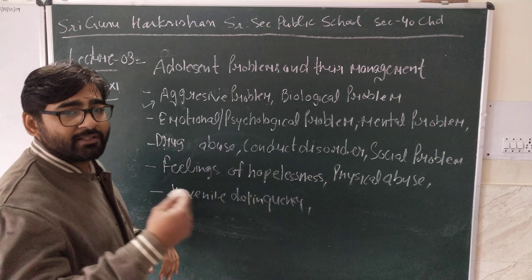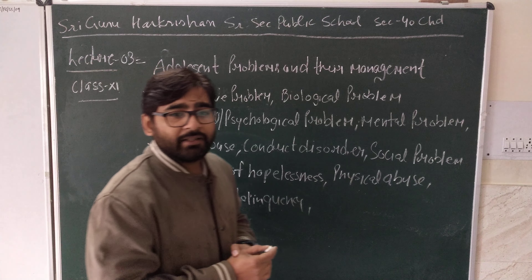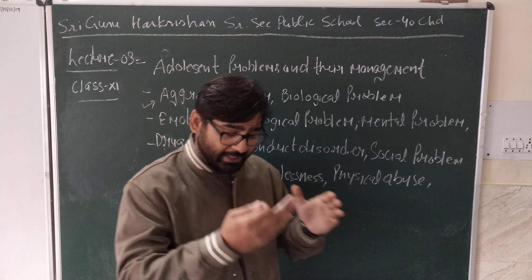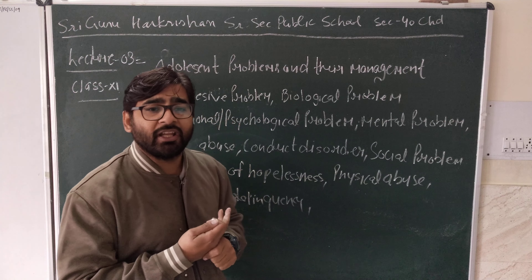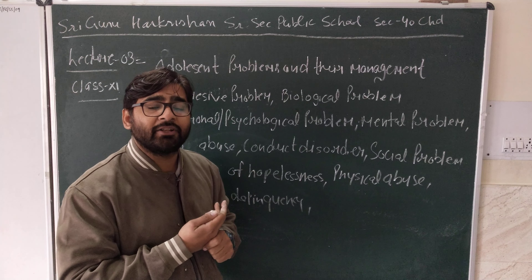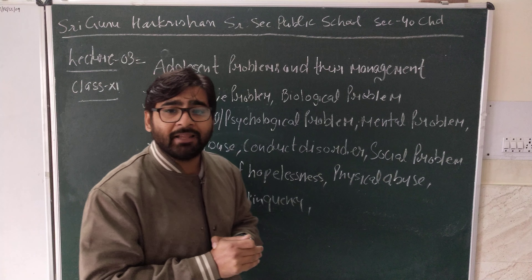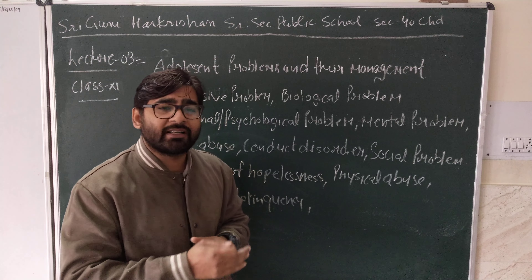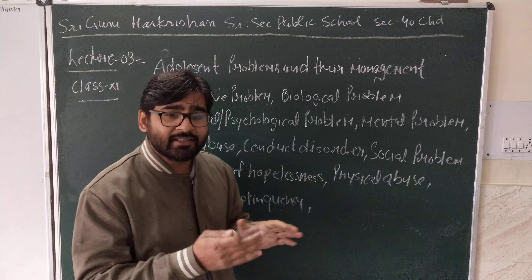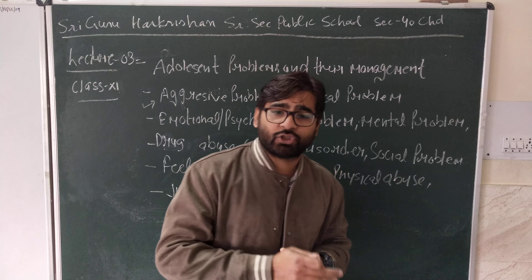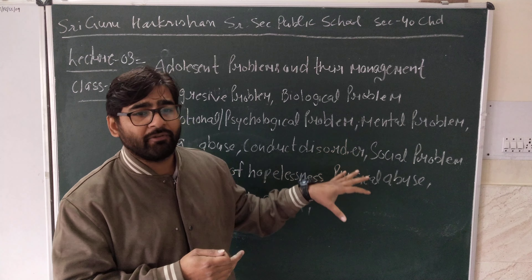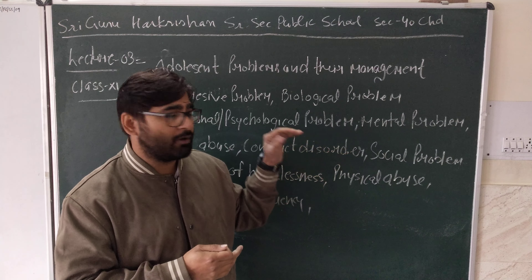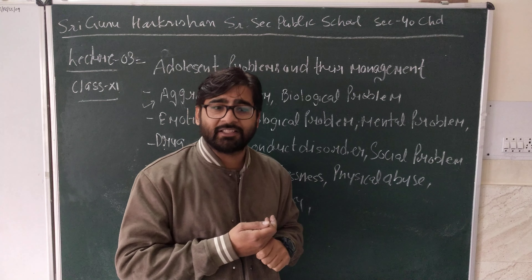The first problem is the aggressive problem in adolescence. In this age, children show aggressive behavior and become irritated easily when asked to do something they don't like. Sometimes they are rebellious towards criticism, and adolescents display rebellious behavior towards their parents whenever there is conflict between them.